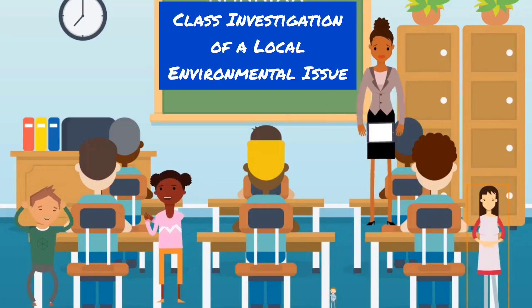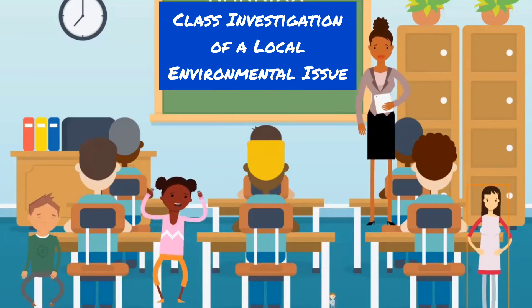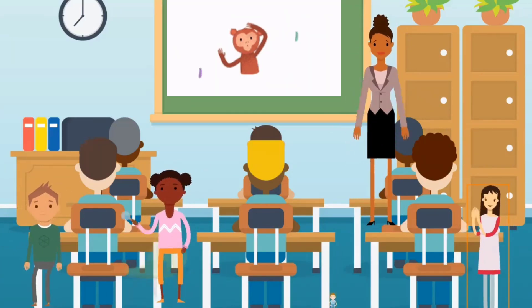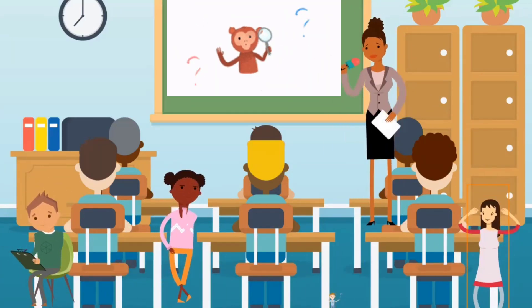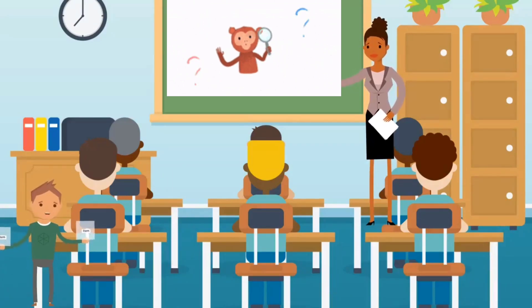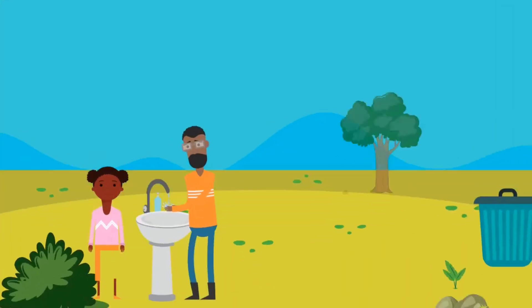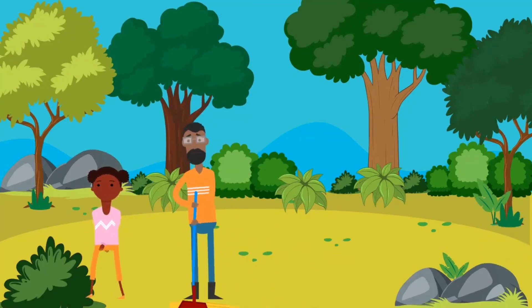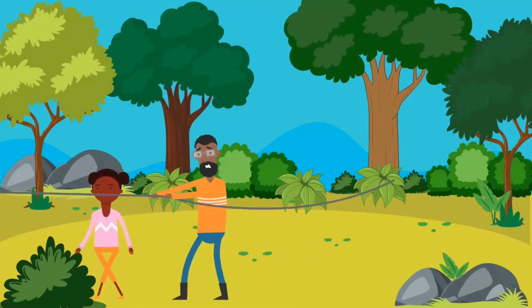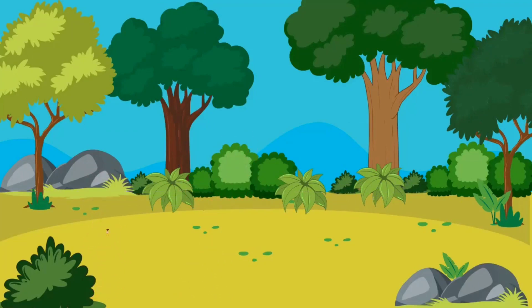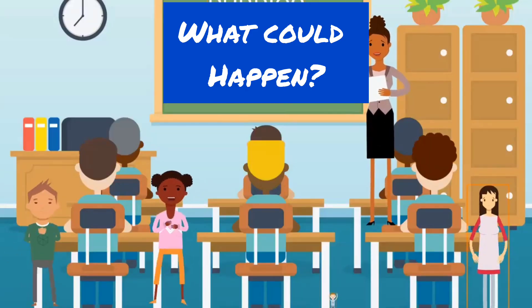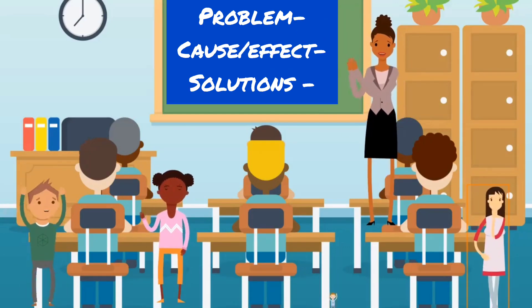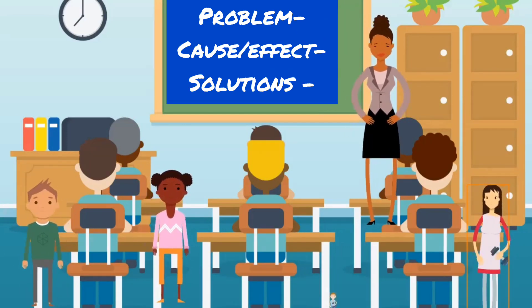Now that we know what some environmental problems look like, let's investigate one that happens here in our community. We won't go outside, but we can imagine it based on what we've seen. Let's say we have a problem with garbage in the streets. Think about what causes garbage to pile up, what could happen if we don't solve it, and most importantly, what can we do to help? Write down your answers on your observation worksheet.